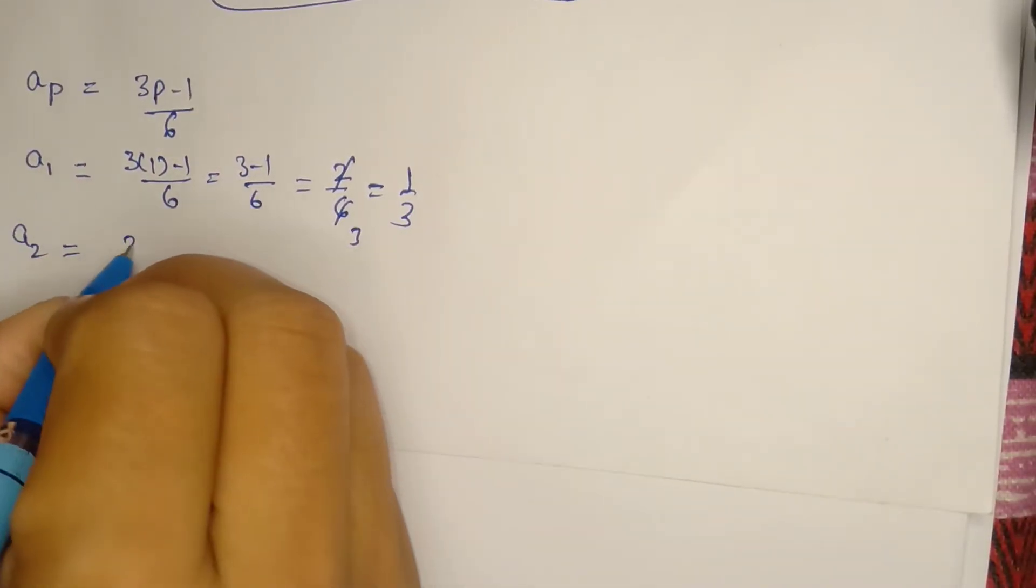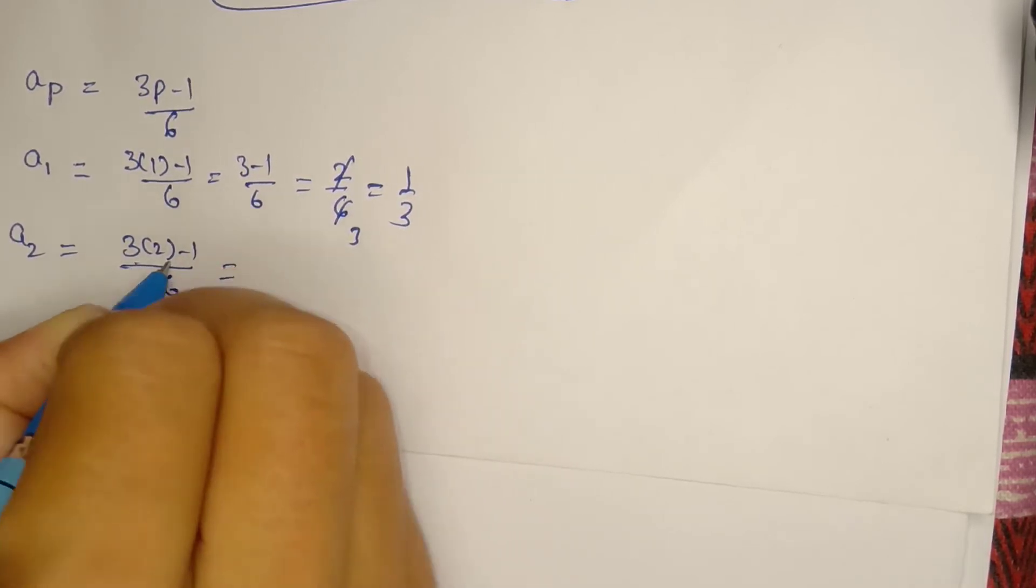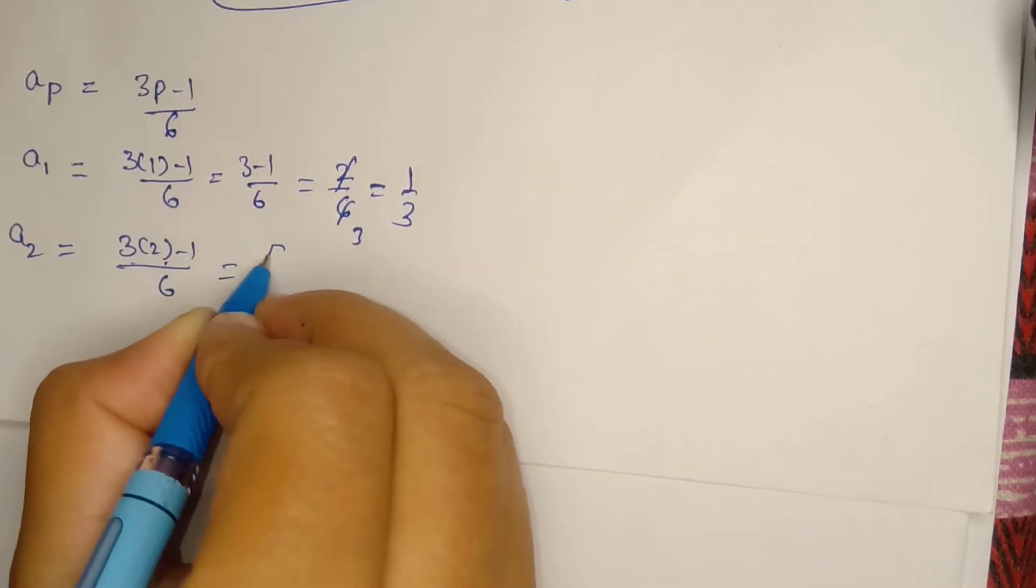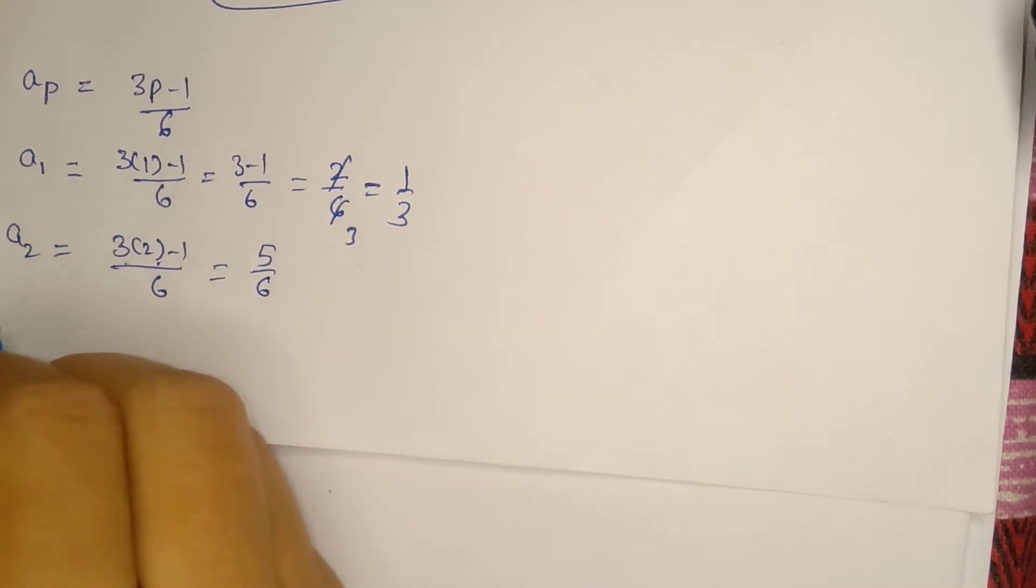How do we find a2? 3 into 2 minus 1 over 6. 3 into 2 is 6 minus 1, which gives us 5/6.